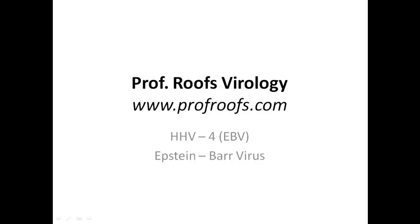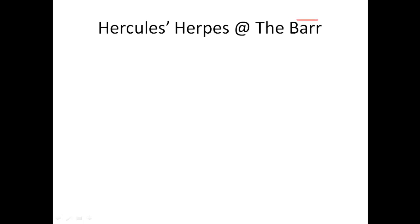Now I warn you ahead of time, this one's going to get a little graphic, so if you get offended, I advise you not to watch this. So we're going to take the word Barr, because Epstein-Barr actually has two R's in it. If you look at all the letters, there's four letters, so that will remind you that it is HHV number 4.